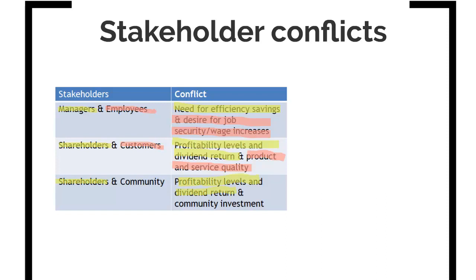Then lastly in the bottom row we have shareholders and community. Shareholders want to see profitability levels and good dividend return, but the community want to see an investment in the community such as reducing pollution or waste disposal. The conflict is very much like the previous one — the community says we'd like you to invest in something for us, but the shareholders say no, we'd like you to divvy that money up to us as a return on our investment. We want to see your company more profitable — you're just wasting money building parks for people. So those different sets of stakeholders again are in conflict.